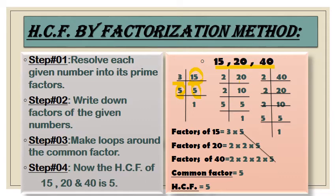For 20, it is divisible by both 5 and 2, but first we take 2 as a prime number. So 2 × 10 = 20, then again 2 × 5 = 10, and lastly 5 × 1 = 5. For the last number 40, it is again divisible by 2, so we follow the same method used for 15 and 20.